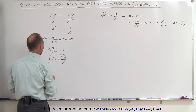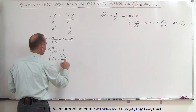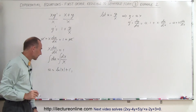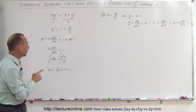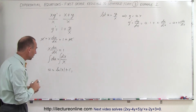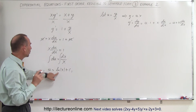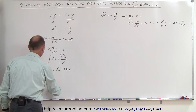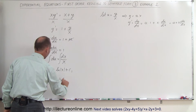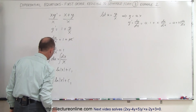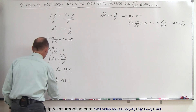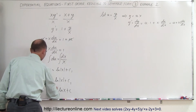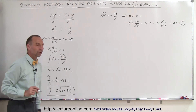Now we integrate both sides of the equation. Integrating the left side and right side gives us u is equal to the natural log of x plus a constant of integration. We then substitute back for u and write y over x equals the natural log of x plus the constant, and therefore y equals x times the natural log of x plus the constant of integration.